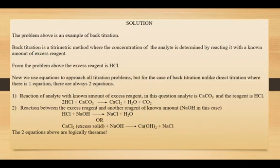This is a typical back titration problem in which you have an analyte whose concentration is unknown. To find that concentration, you react the analyte with an excess reagent — it could be a base, an acid, or any other substance. Looking at this question, the excess reagent is hydrochloric acid and the analyte is the carbonate. We don't know the concentration of the carbonate, but we know the concentration of the hydrochloric acid — it is the excess reagent.